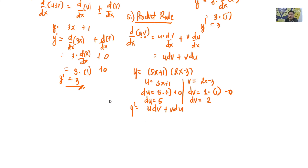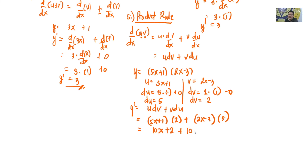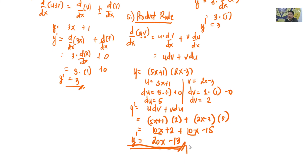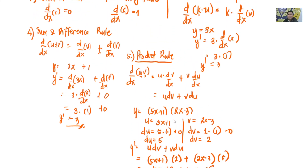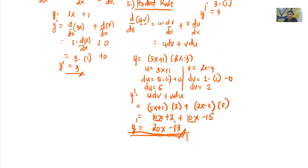Substituting into the formula: u dv + v du = (5x + 1)(2) + (2x − 3)(5). Simplifying: 10x + 2 + 10x − 15 = 20x − 13. Therefore, the first derivative of (5x + 1)(2x − 3) is equal to 20x − 13.